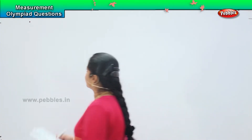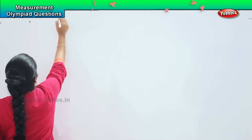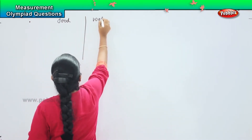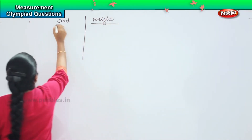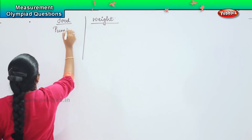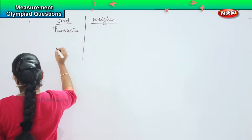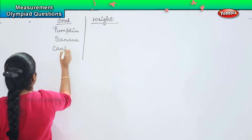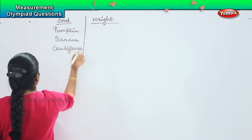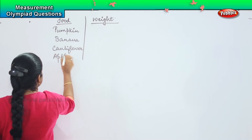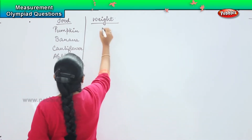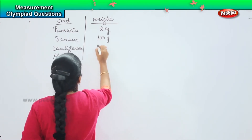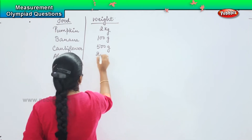Here is the next pattern of question for you. The next pattern shows food in one column and weight in another column. The first one says pumpkin, the second says banana, the third says cauliflower, and the last one says apple. Pumpkin weighs 2 kg, banana weighs 100 grams, cauliflower weighs 500 grams, and an apple weighs 250 grams.